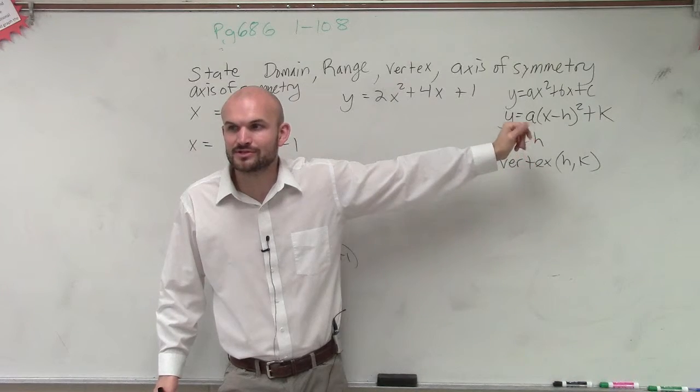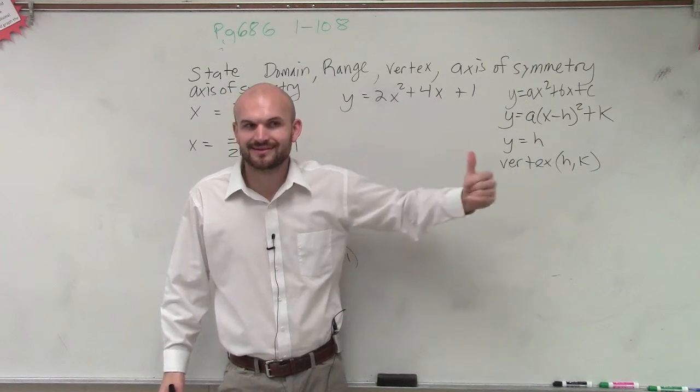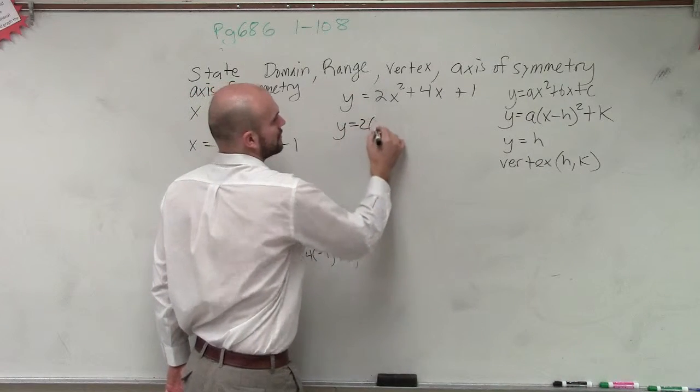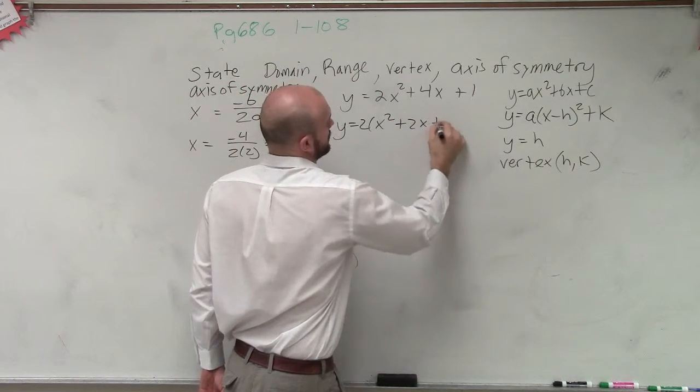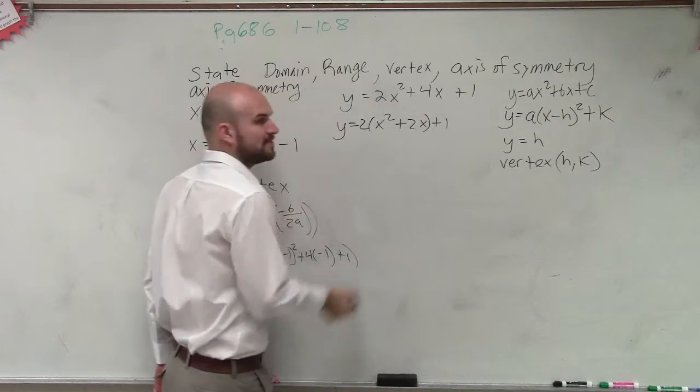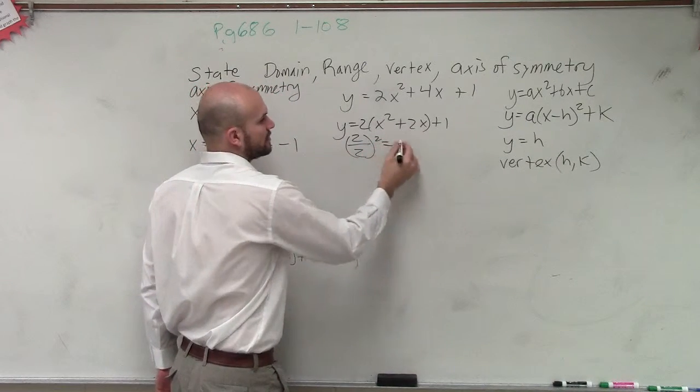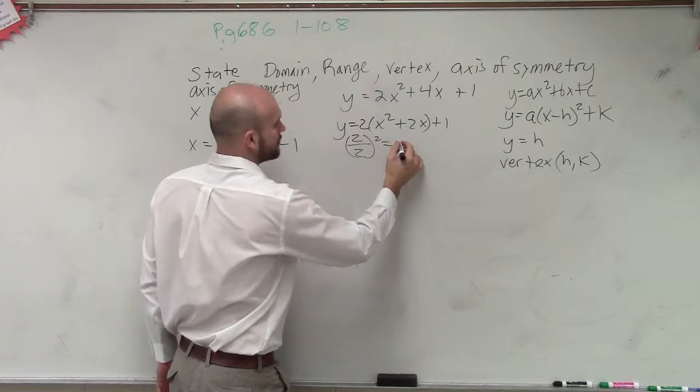Yeah. And the process we do to do that is called completing the square. So completing the square, you'd have to factor out a 2. Then you take 2 divided by 2, square it, which equals 1.